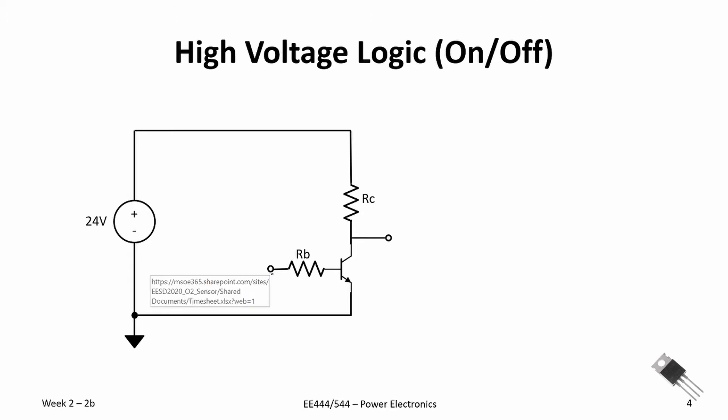the transistor will be in its cutoff region, no current will be flowing through the transistor, and our output will be 24 volts.